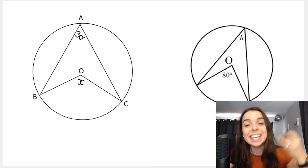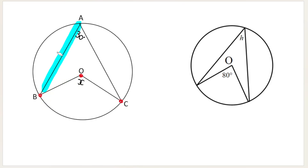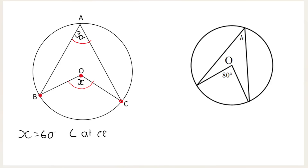Let's do some basic examples. Looking for x: angle O is the angle at the center, formed by B and C, and so is angle A. Angle at center is two times angle at circumference. The center one is always double in size — if this one is 30, x is going to be 60. Statement: x equals 60. Reason: angle at center equals two times angle at circumference. You are allowed to abbreviate circumference.